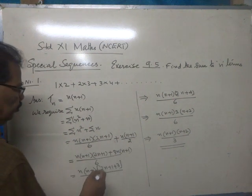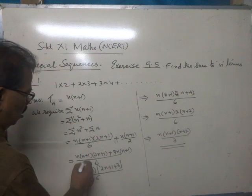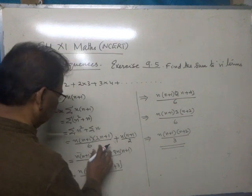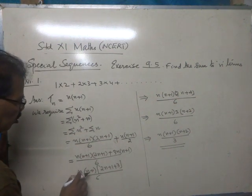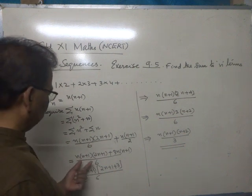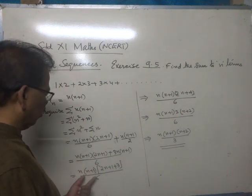Now, n(n+1) is here. Here also, n(n+1) is available. Therefore, n(n+1) can be taken as a common factor.